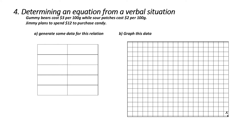Our final example is a word problem: determine an equation from a verbal situation. Gummy bears cost $3 per 100 grams, while sour patches cost $2 per 100 grams. Jimmy plans to spend $12 to purchase candy. Notice one thing we need is how much of each type of candy he purchased. Since neither of these is an independent or dependent variable, we can place either one in for x or y. I've decided that the amount of sour patches in grams will be x, and the amount of gummy bears in grams will be y.